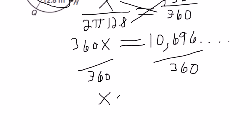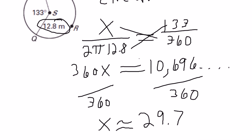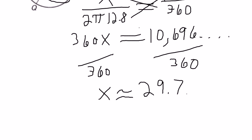So on my calculator, I'll just press divided by 360. Notice I have not pressed clear at all. You want to try not to round until the very end. And so now I will round to 29.7, and this is meters. So that arc length is approximately 29.7 meters.